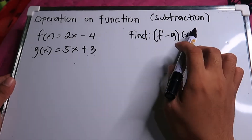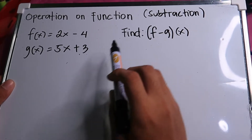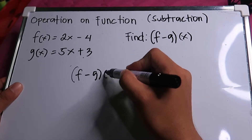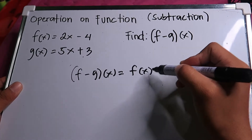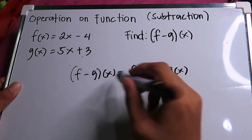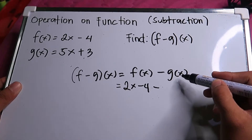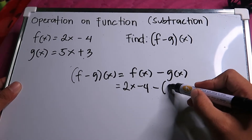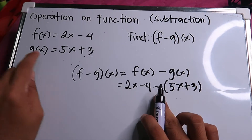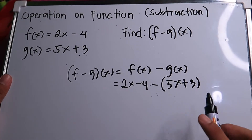Operation on functions — subtraction. We have the same values: f(x) equal to 2x minus 4, g(x) equal to 5x plus 3. Find the quantity of (f − g)(x). Now (f − g)(x) equals f(x) minus g(x). The value of f(x) is 2x minus 4, so copy that. Don't forget the minus sign. The value of g(x) is 5x plus 3 — put it in parentheses so the original function is not changed.